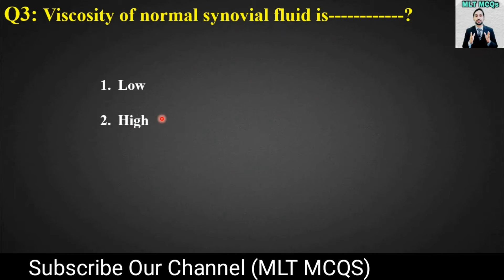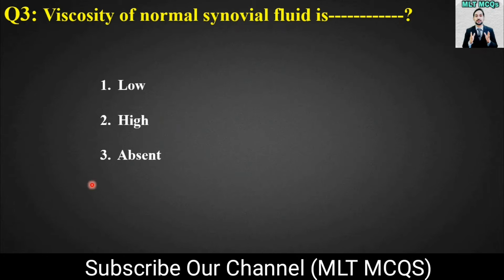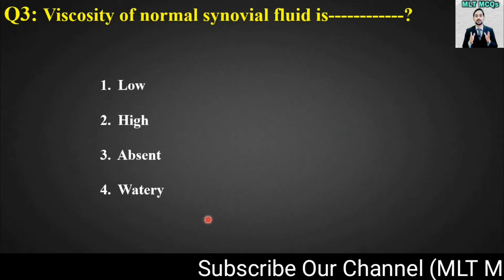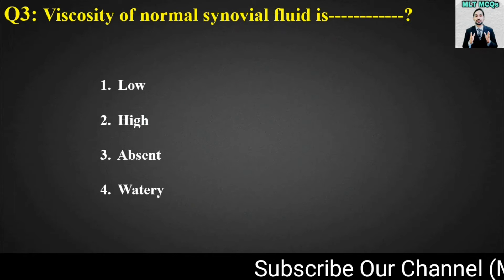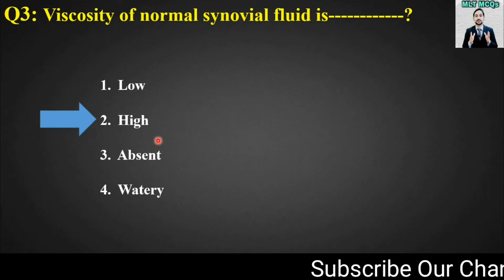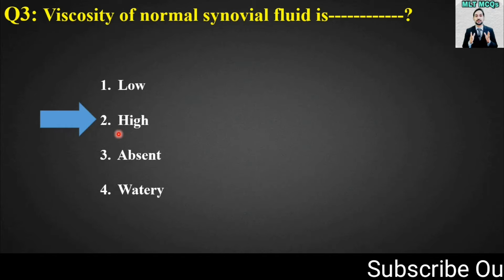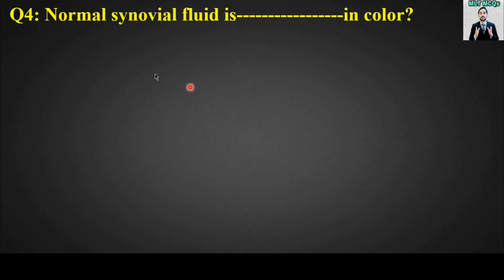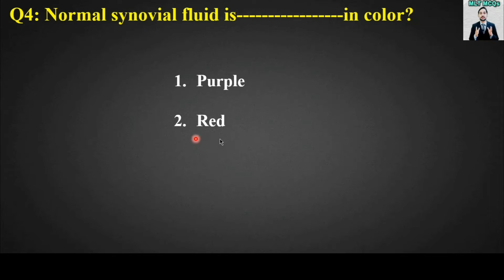MCQ number three: Viscosity of normal synovial fluid is blank. Options are: low, high, absent, or watery. The right answer for this MCQ is option number two — viscosity of normal synovial fluid is high.